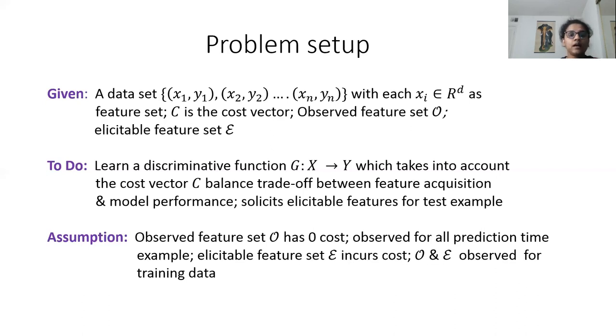This is a reasonable assumption because for training data, it's usually reasonable that you will get all features from a patient's medical history or other sources. But at test time, identifying elicitable features is of utmost importance because either a patient doesn't want to pay extra for unnecessary lab tests, or the hospital doesn't have enough resources to accommodate a patient.